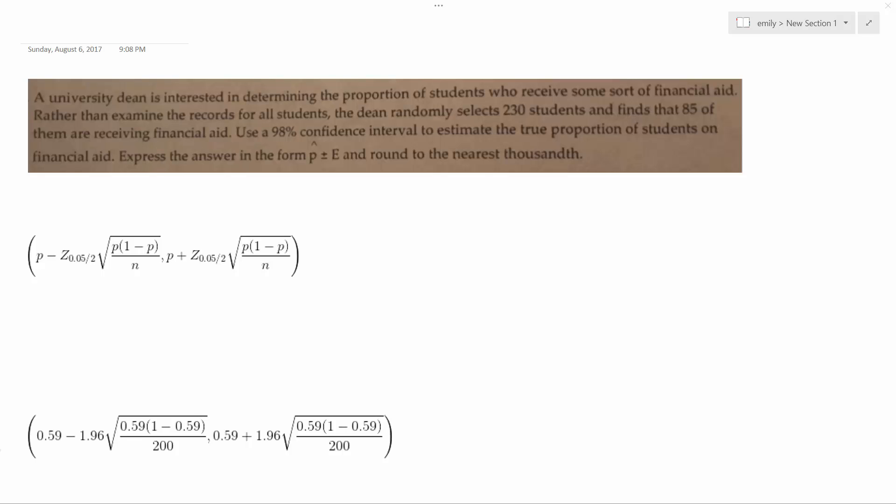A university dean is interested in determining the proportion of students who receive some sort of financial aid. Rather than examine the records for all students, the dean randomly selects 230 students and finds that 85 of them are receiving financial aid. Use a 98% confidence interval to estimate the true proportion of students who receive financial aid.